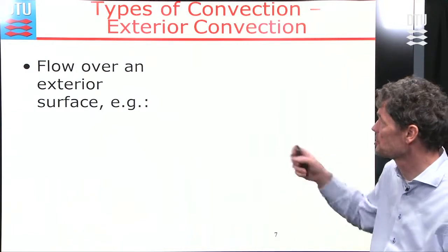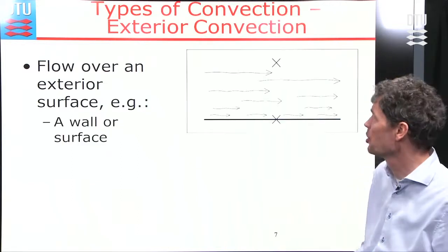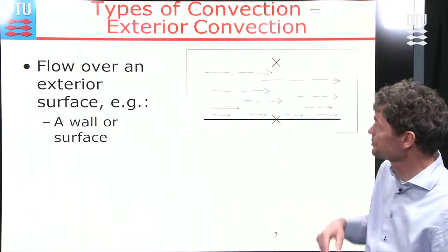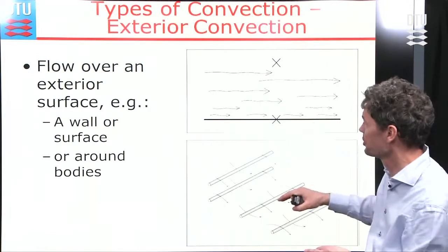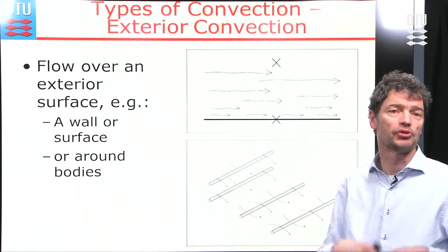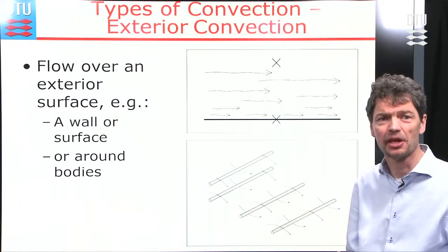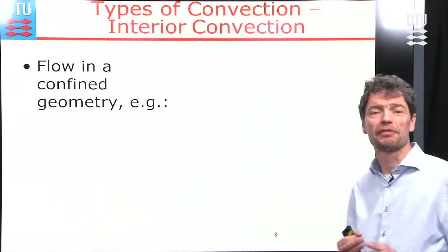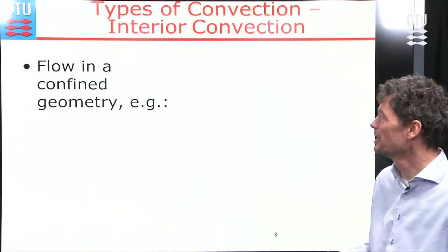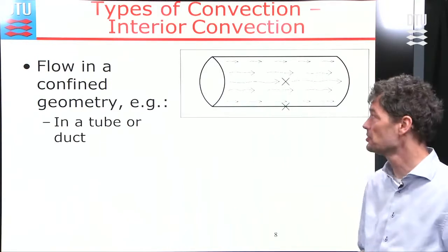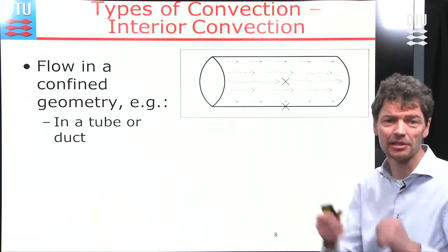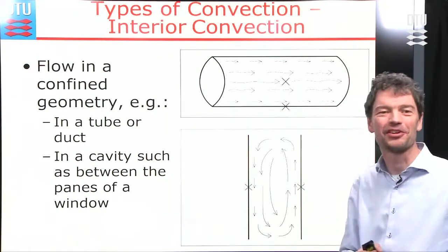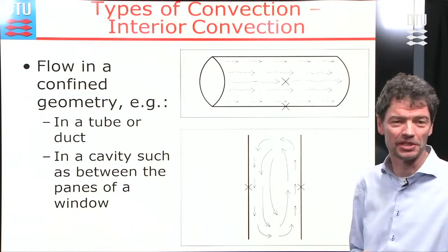For a flow over a certain surface, we could have flow over a flat surface, or flowing around tubes or ducts — these are exterior convection examples. You could also have flow within an object in a confined or enclosed geometry — within a tube, duct, channel, or a cavity where air or fluid circulates up and down within its boundaries.